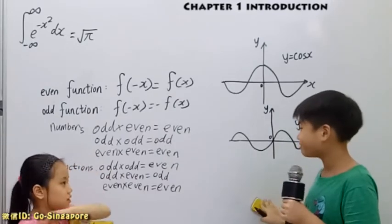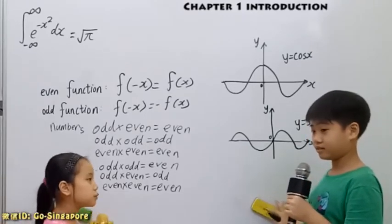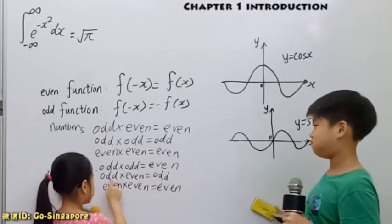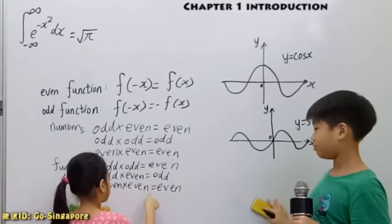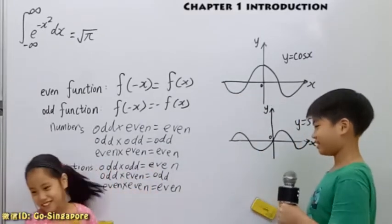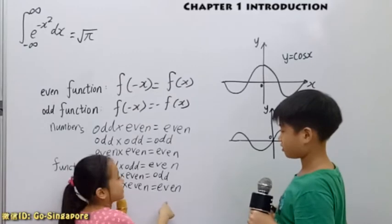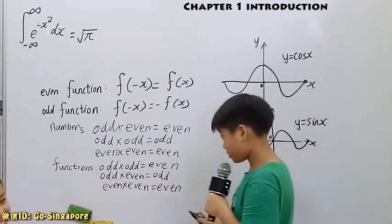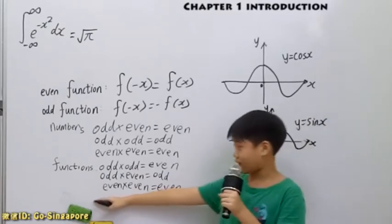Odd function times odd function. Are you sure that's an even function? Yes. Yes, correct. That is the difference between these numbers and functions. Only even and even are the same. And, do you know that the function is more like positive and negative times? Because negative times negative is positive.